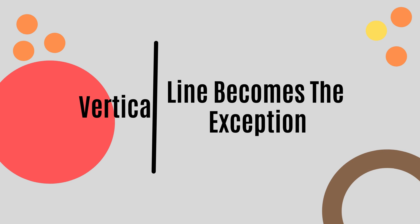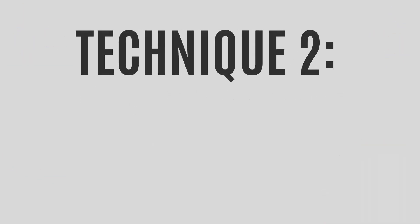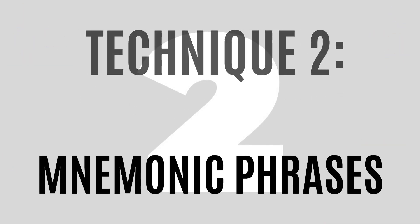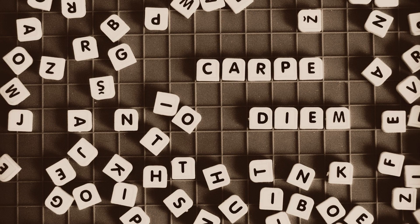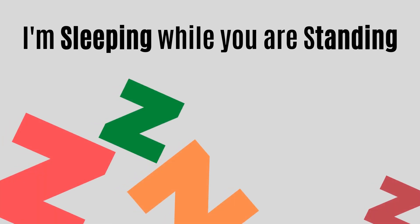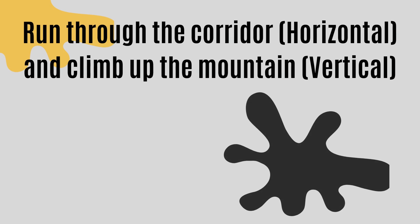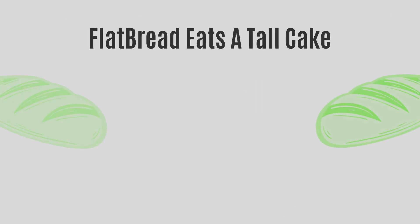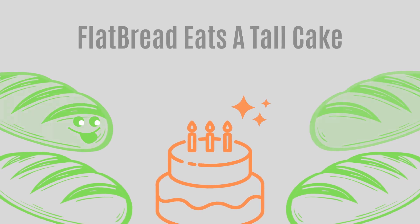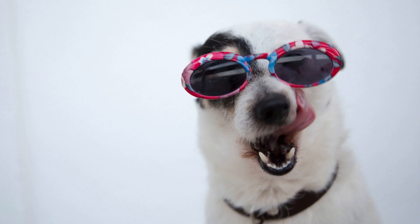Technique 2 – Mnemonic Phrases. Making use of simple mnemonic phrases also works. Here are a few mnemonic phrases that you can use: 'I am sleeping while you are standing.' 'Run through the corridor — horizontal — and climb up the mountain — vertical.' 'Flatbread eats a tall cake.' Those were just a few ridiculous phrases. You can also make your own if you want to.